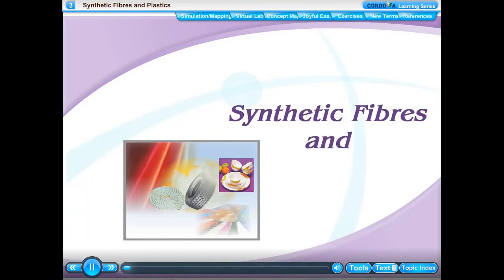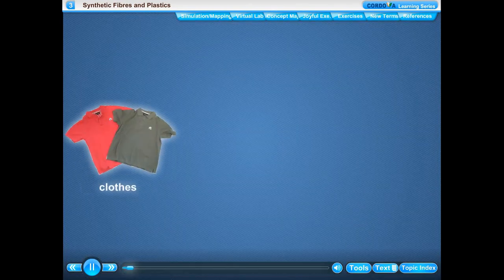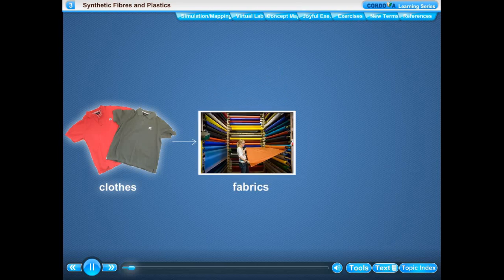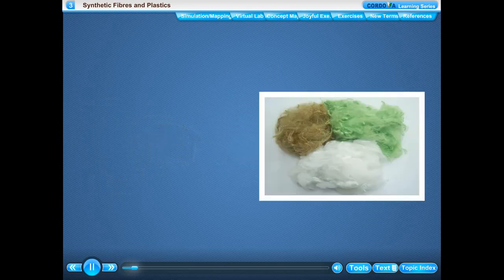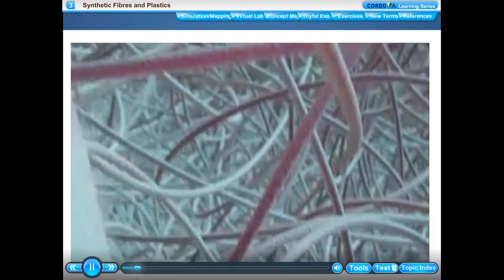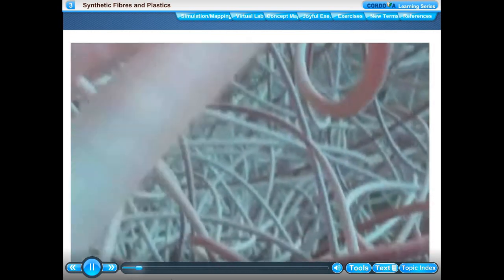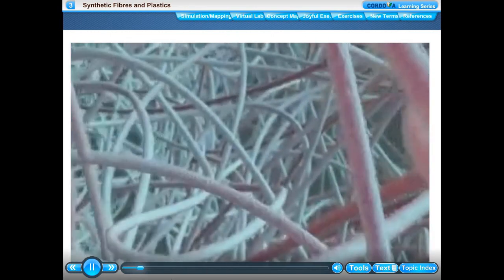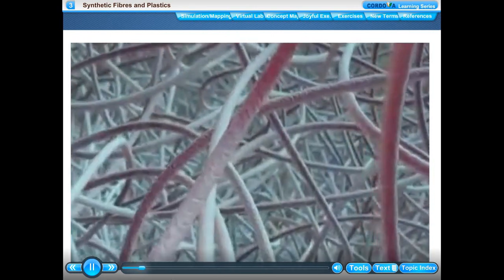Chapter 3: Synthetic Fibers and Plastics. We know that the clothes which we wear are made of fabrics. Fabrics are made from fibers. A fiber is a thread-like material that is strong and flexible enough to be converted into fabrics and several household items like ropes and nets.